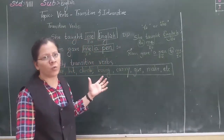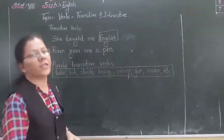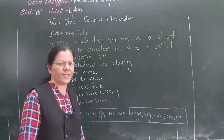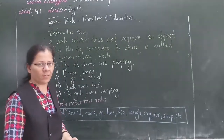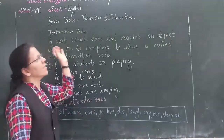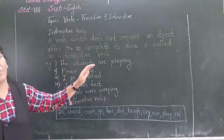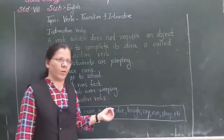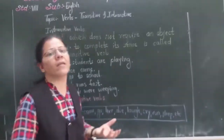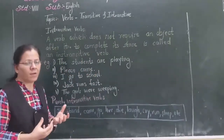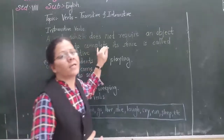I hope you have understood what a transitive verb is. Now let us move towards intransitive verb. Transitive verb is the verb which requires an object. Exactly the opposite is intransitive verb. A verb which does not require an object after it to complete its sense is called an intransitive verb. Without an object, the meaning is clear.